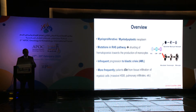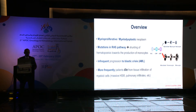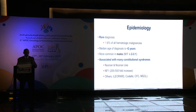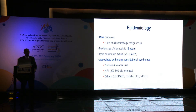JMML is a myeloproliferative myelodysplastic neoplasm where mutations in the RAS pathway cause shunting of hematopoiesis towards monocyte production. There is infrequent progression to blast crisis in specific acute myeloid leukemia; more frequently, patients die from tissue infiltration of myeloid cells, especially pulmonary infiltrates in young age causing respiratory failure. It's a rare diagnosis constituting 1.6% of all hematological malignancies. The median age at diagnosis is less than 2 years, more common in males, and associated with Noonan syndrome, neurofibromatosis type 1, and other syndromes.